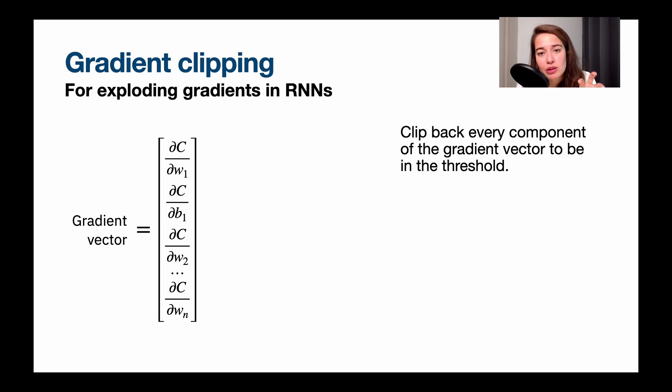This is specifically for the exploding gradients problem when you're doing it on RNNs. The reason we have gradient clipping for RNNs is that they found out that batch normalization cannot be easily used in RNNs.